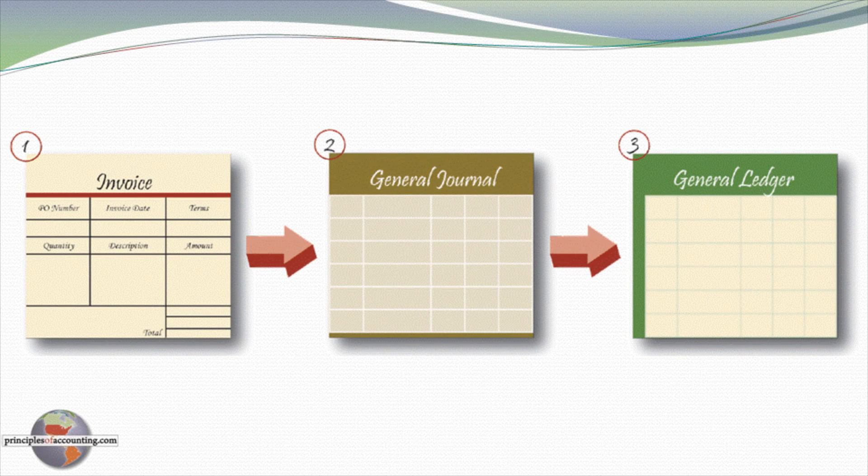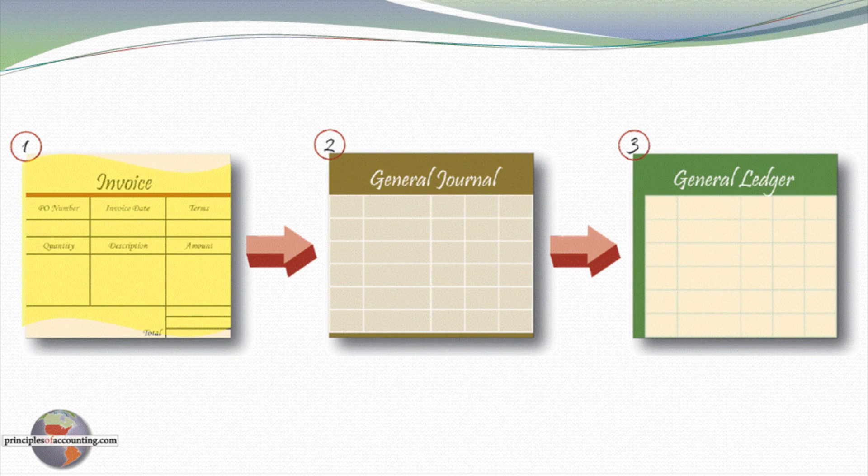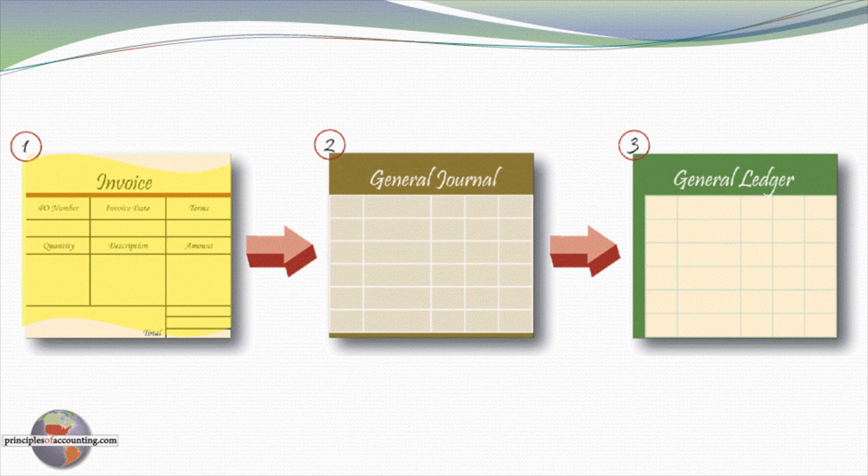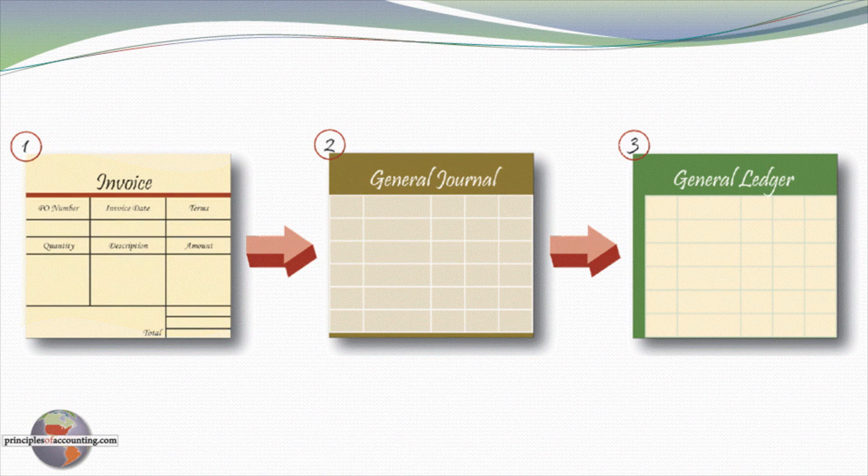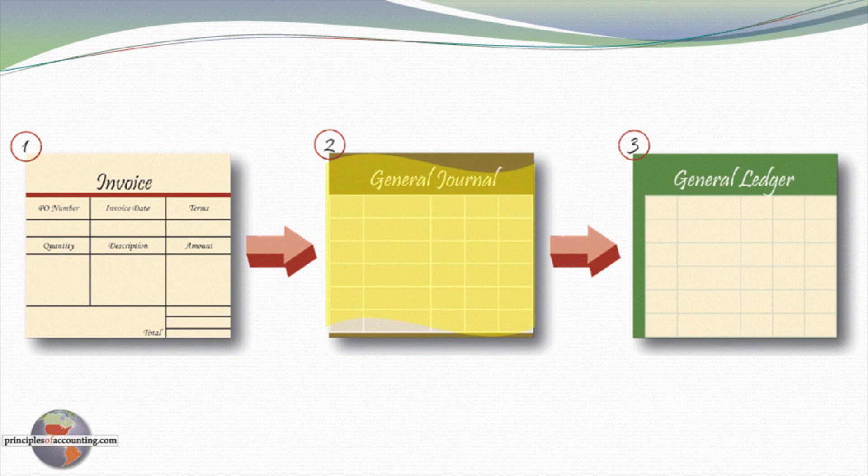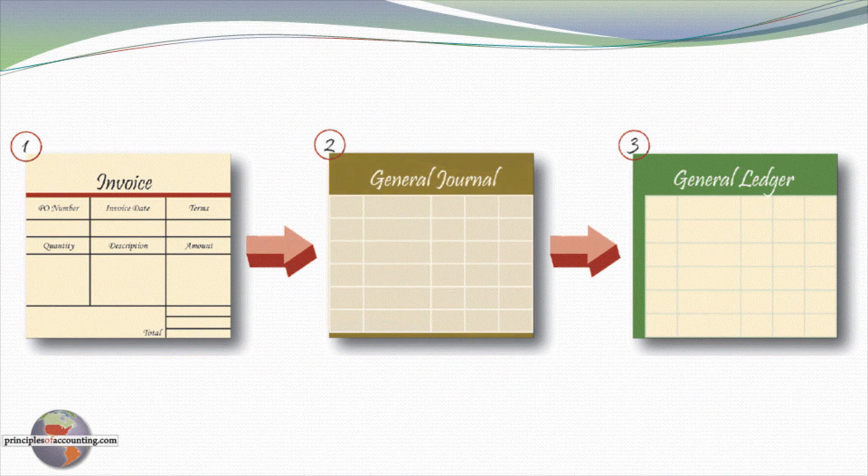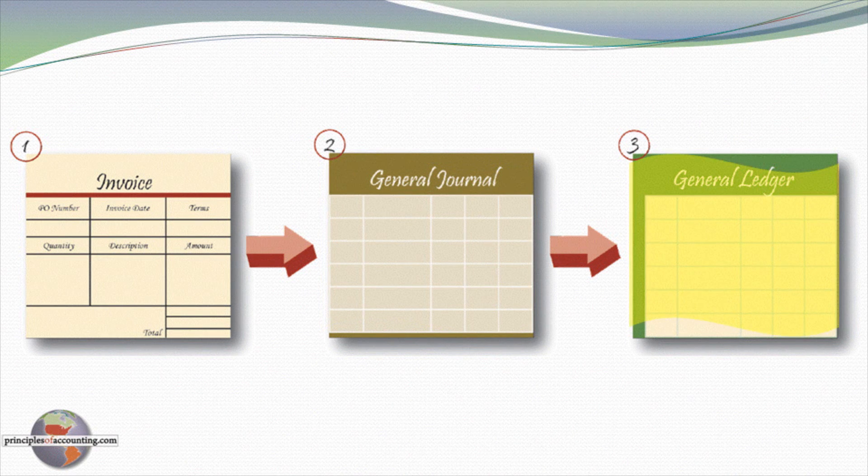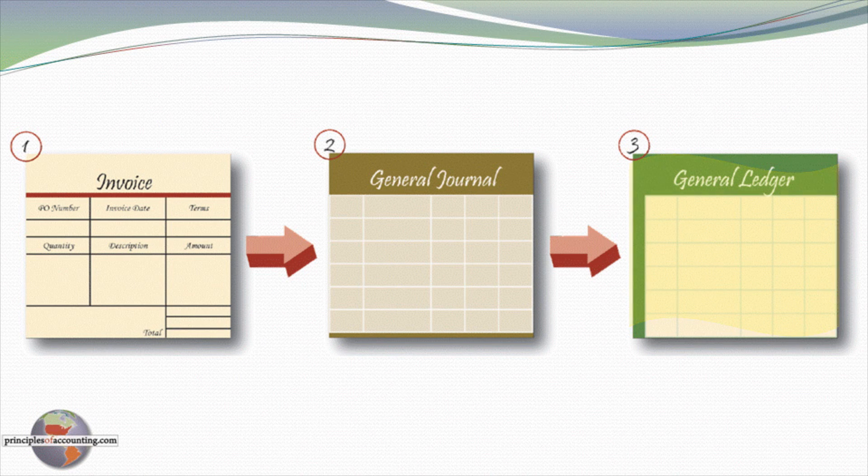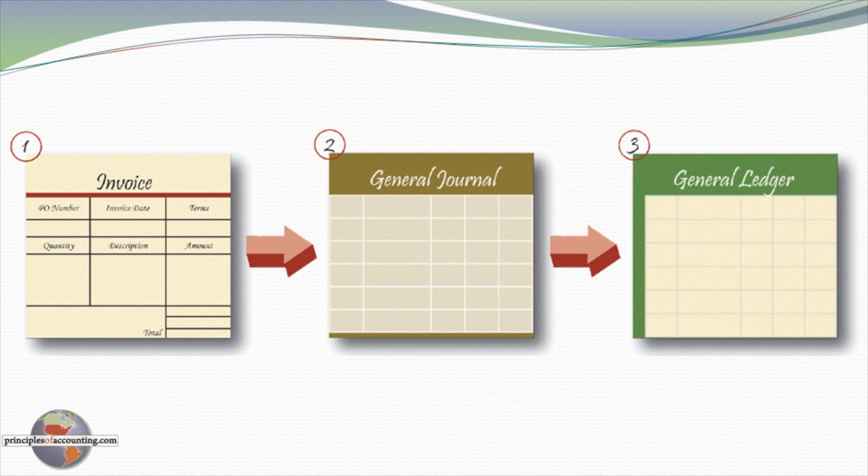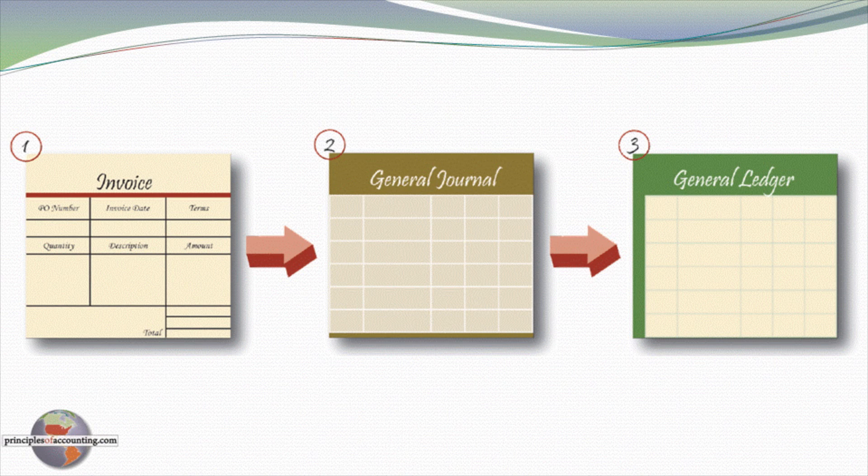This drawing might be helpful. We examine our source documents, such as an invoice, to determine the accounts affected and their effects. We translate that into debit credit nomenclature and place that into the general journal. Periodically then, we post the journal information to the ledger. The ledger accounts then give us a basis for moving forward in the accounting process toward the preparation of financial statements.